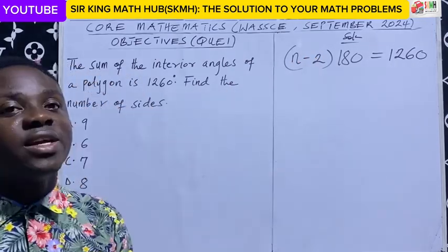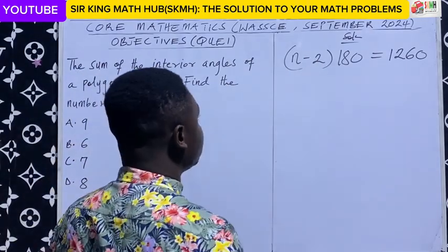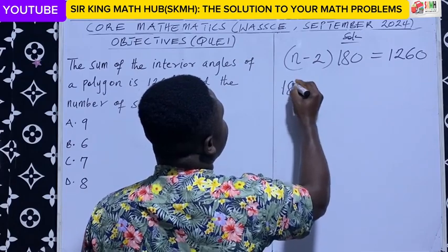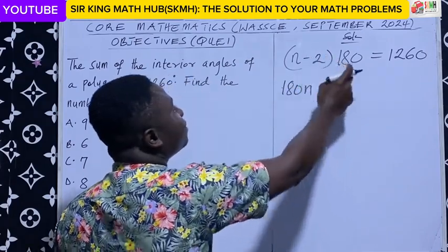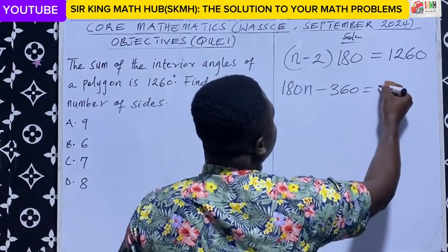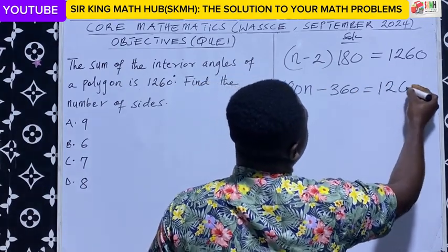So how do we find n? Let's expand the brackets. n times 180 gives us 180n, and then negative 2 times 180 is negative 360. This should be equal to 1260.